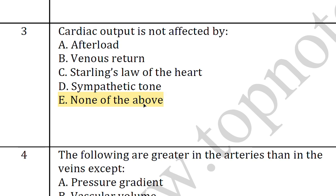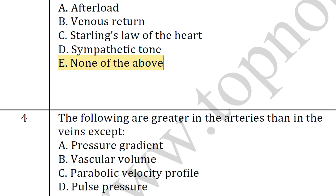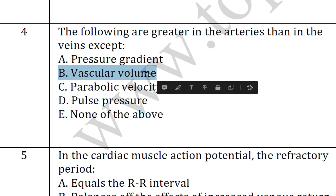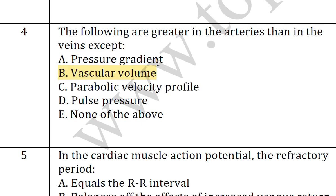The fourth question: the following are greater in the arteries than in the veins, except — the answer is B, vascular volume, which is greater in the veins than in the arteries.